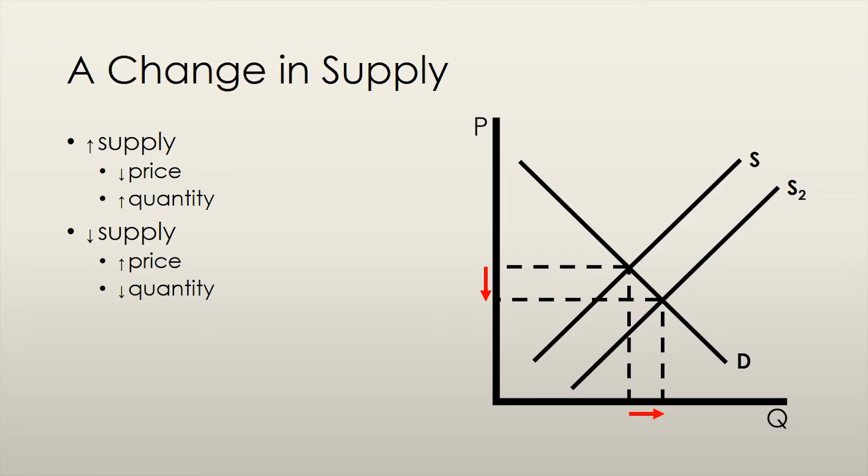Thus, sellers begin to lower their prices until a point at which the quantity demanded equals the quantity supplied. This is shown on the graph as the intersection of the new supply curve with the demand curve. With an increase in supply, we can see that equilibrium price falls and the equilibrium quantity rises.